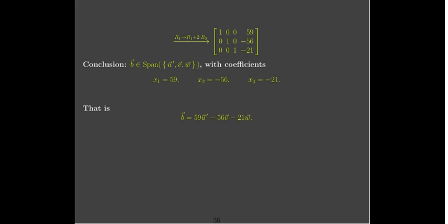Moving up one row and left one column, I need a zero above that leading one. I replace row 1 with row 1 plus 2 times row 2, since negative 2 plus 2 gives zero. Now the matrix is in reduced row echelon form and I can read off the solution: x3 equals negative 21, x2 equals negative 56, x1 equals 59. Since we have a solution, b is in the span — the vector b equals 59 times u prime minus 56 times v minus 21 times w.